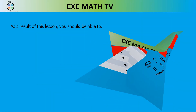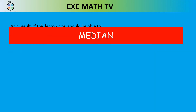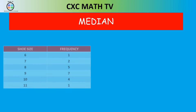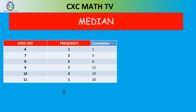To find the 10.5th term, create a cumulative frequency table. One person wore size 6 (cumulative: 1), two wore size 7 (cumulative: 3), five wore size 8 (cumulative: 8), and seven wore size 9 (cumulative: 15). The 10th and 11th positions both fall within the size-9 category, so the median shoe size is 9.